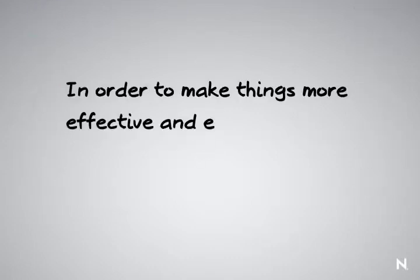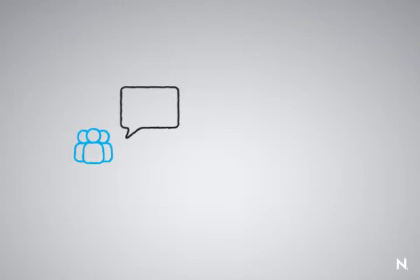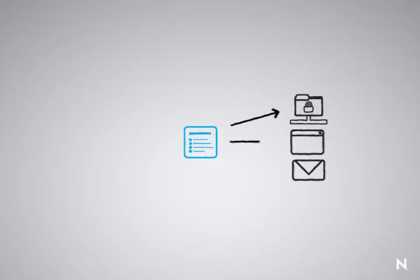But in order to make things more effective and efficient, we use different abstraction points to manage them. For example, there may be many people that need the exact same type of rights. At the same time, there may be the same types of rights that can be granted to multiple types of systems.